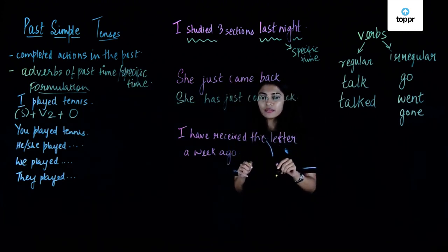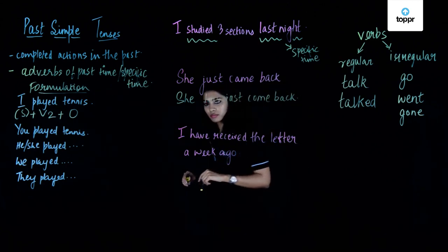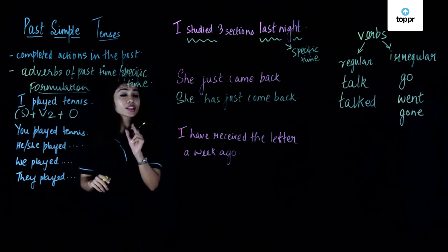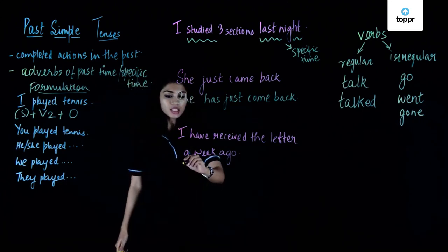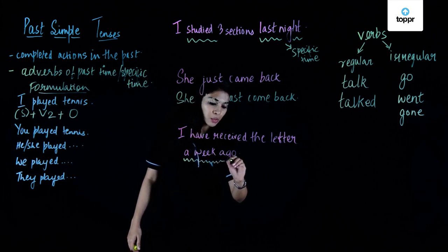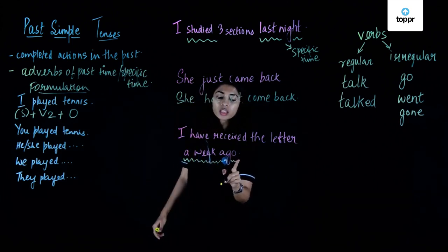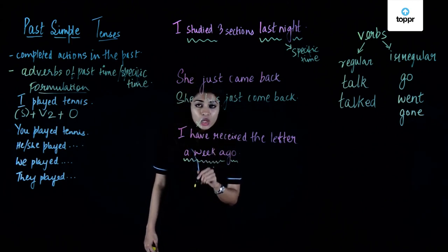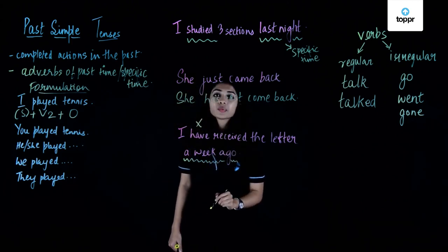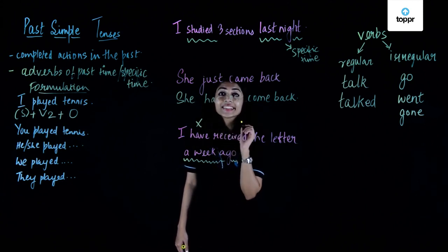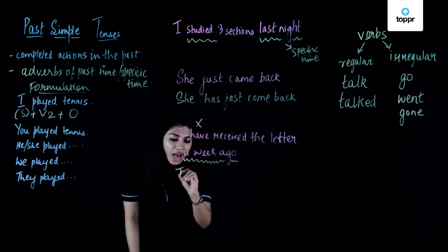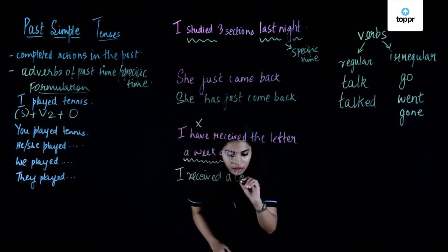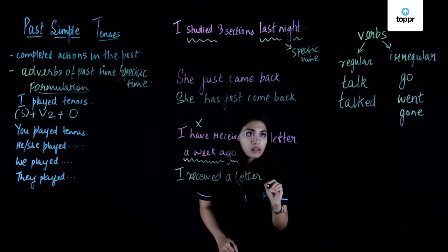Next: 'I have received the letter a week ago.' Correct or incorrect? Since the time expression 'a week ago' is used, we cannot use the present perfect tense. We have to use the past simple tense. So it would be: 'I received a letter a week ago.'